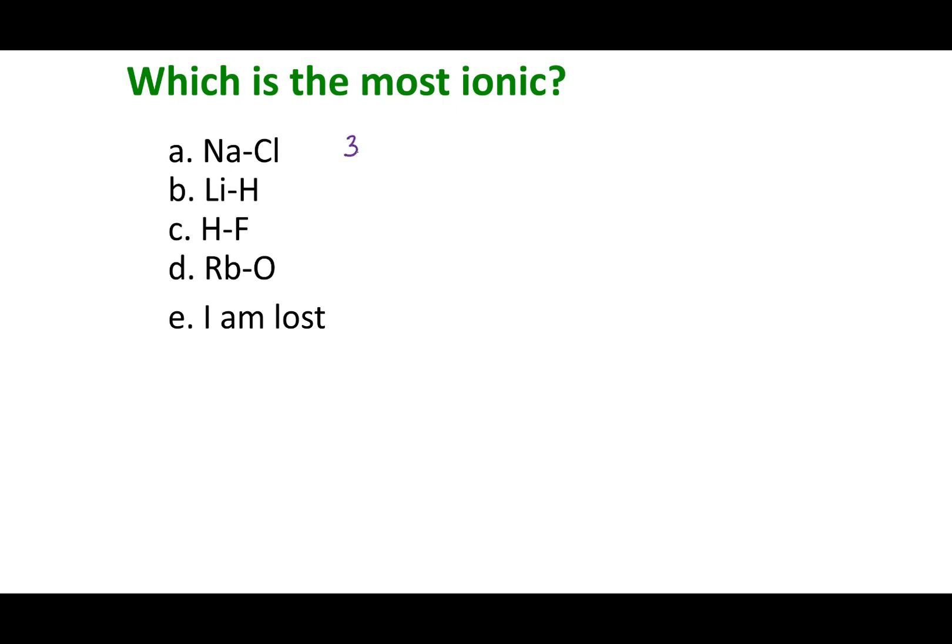Alright, looking up the values, we have chlorine at 3.0 minus 0.9 for NaCl, we get 2.1. You guys can say that NaCl is an ionic compound. This electronegativity difference corresponds to what we would previously have assessed NaCl as. LiH, 2.1 minus 1.0, 1.1 is our resultant electronegativity difference. For HF, we have 4.0 minus 2.1. This gets us to 1.9.